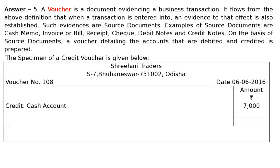Now, what is this being given for? Why are you giving cash? Being goods purchased for cash as per bill number dash dash. We are buying something — purchases is an expenditure and cash is an asset. Cash is going out, so it will be credited. Hence credit voucher: cash 7000 is credited. The narration reads: being goods purchased for cash as per bill number dash dash.